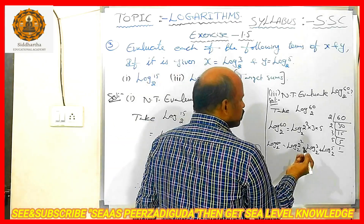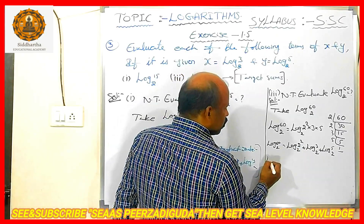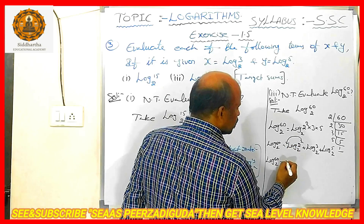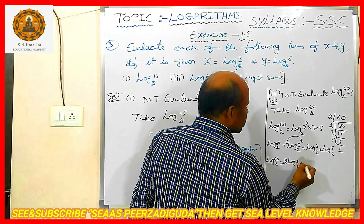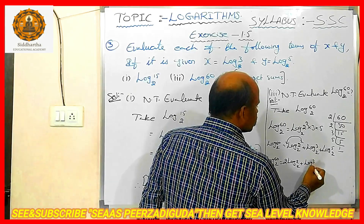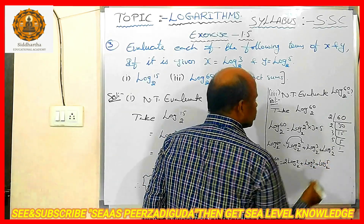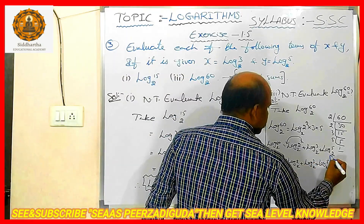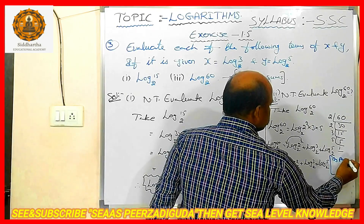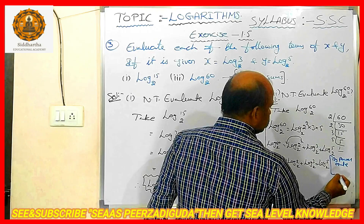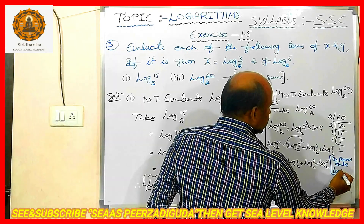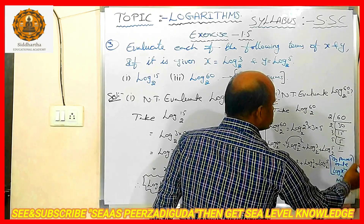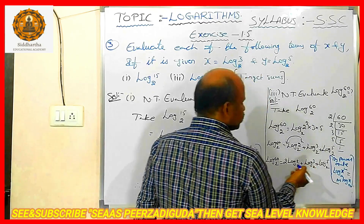Like that only I split it. Then you observe over here — power formation is there. Log 60 base 2 equals: the power formation on log 2 squared base 2, so this 2 (the exponent) I am going to bring out front: 2 log 2 base 2 plus log 3 base 2 plus log 5 base 2. Which rule I used over here? Power rule. The power rule is: log x^m base a is equal to m · log x base a. By using this formula I split it like this.